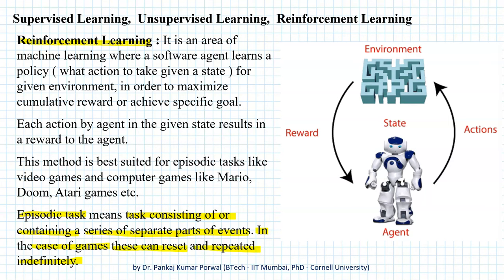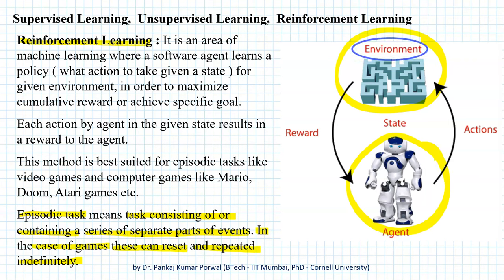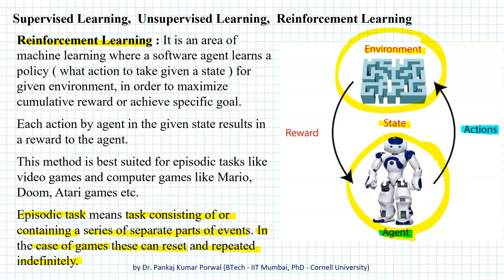In reinforcement learning, we have an environment — for example, a game — and an agent, that is a player who plays that game. The environment and the agent are in some state. The agent is required to perform some action that results in a change of state, and as a result of that change in state, the agent receives some reward from the environment.